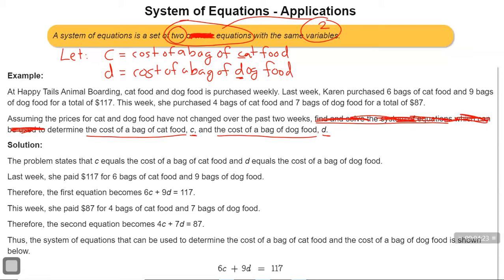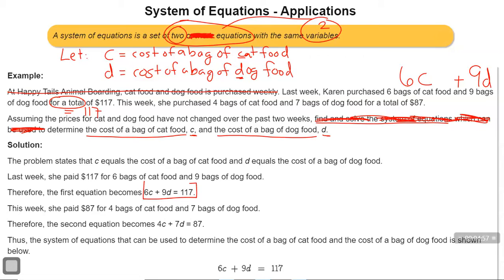At Happy Tails Animal Boarding, cat food and dog food is purchased weekly — that is just setup information; it doesn't give me a statement of equality. Last week, Karen purchased six bags of cat food and nine bags of dog food for a total of $117. 'For a total' means equals $117. Six bags of cat food and nine bags of dog food equals $117. That gives us our first equation: 6C plus 9D equals 117.